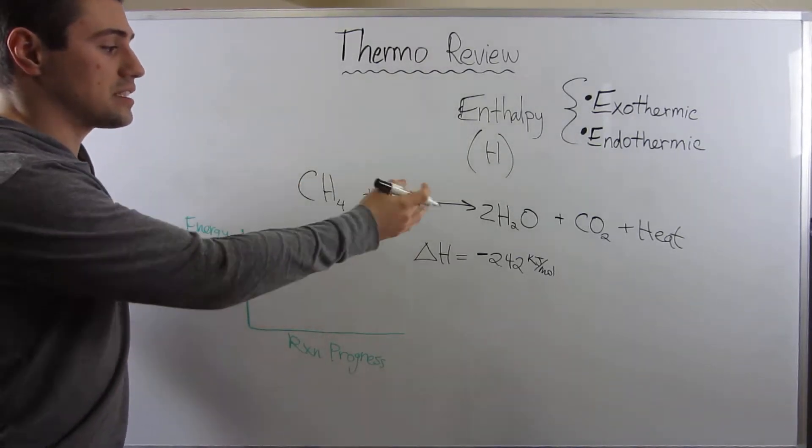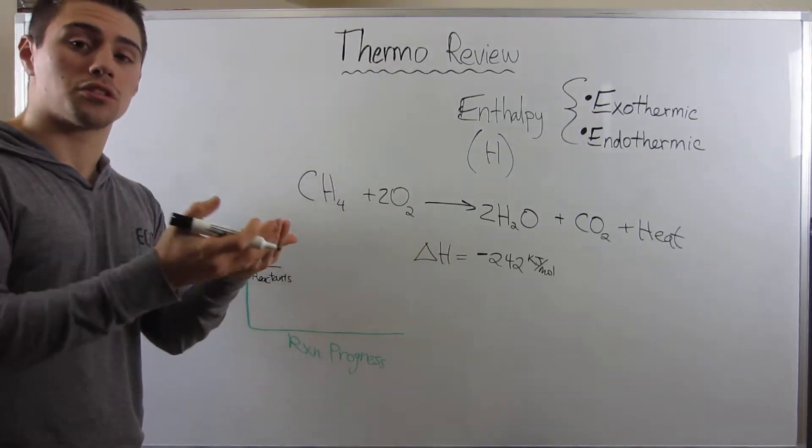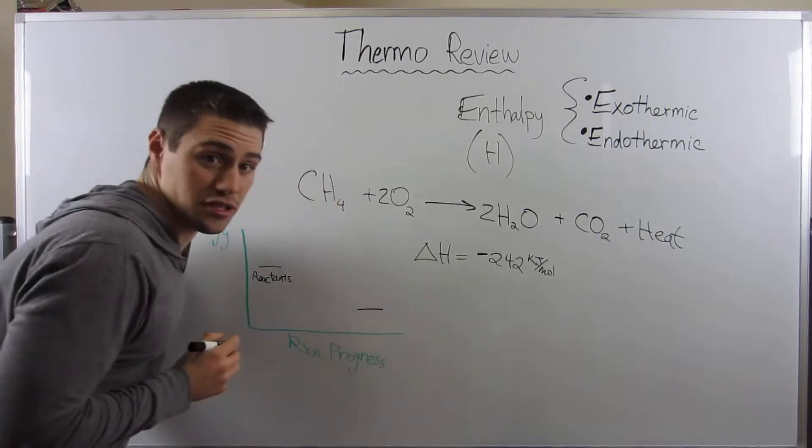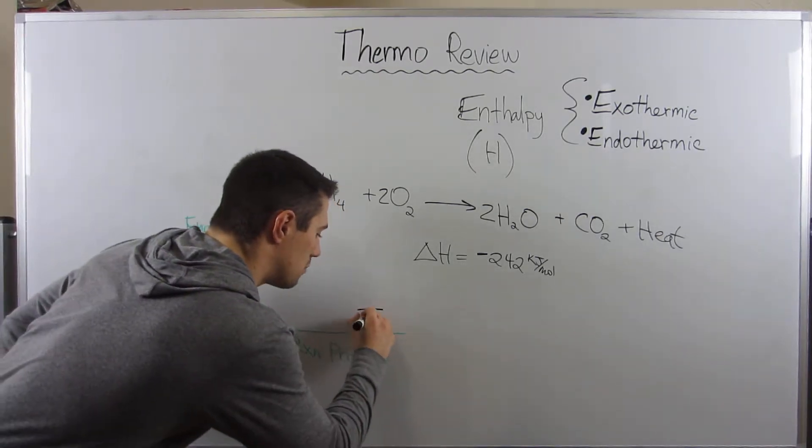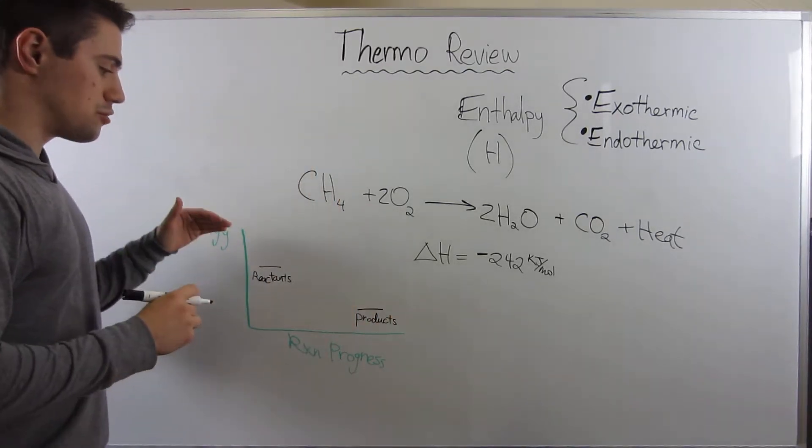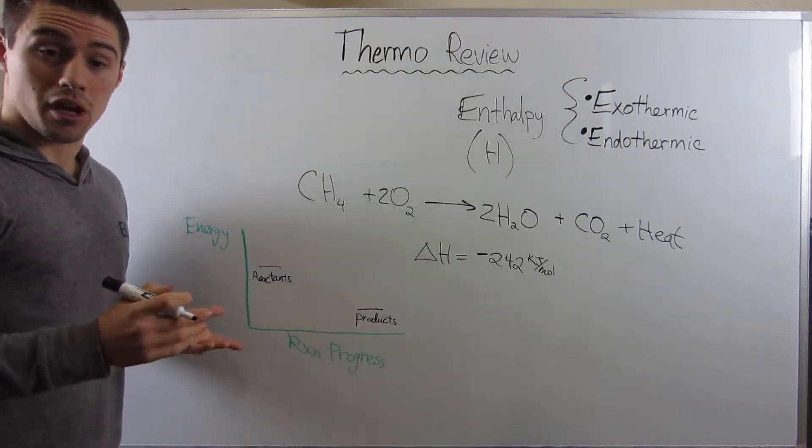We know that since heat is given off in this exothermic reaction and we discussed how that lowers the energy of a system, the products are going to be at a lower energy state. So I'm going to write products. Now we kind of have to draw our line connecting these two levels together and we're done.